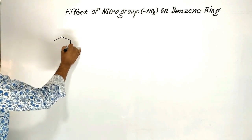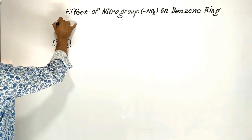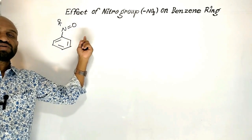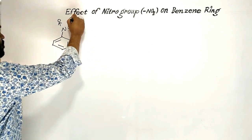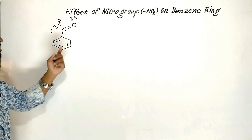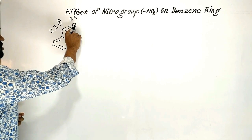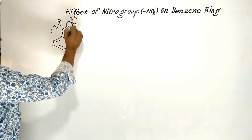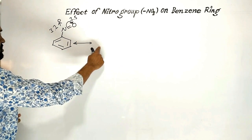In nitrobenzene, the nitrogen-oxygen double bond has electronegativity of oxygen at 3.5 and nitrogen at 3.1. Because of this electronegativity difference, the bonded electrons of the nitrogen-oxygen bond move towards oxygen, and as a result we get a resonance structure in which oxygen gets negatively charged and nitrogen gets positively charged.